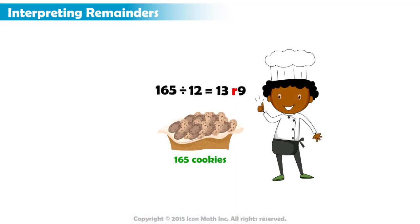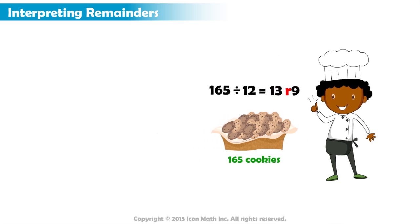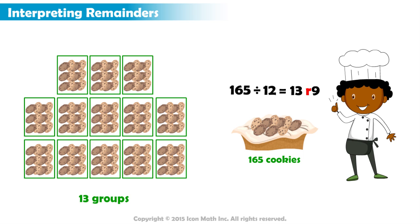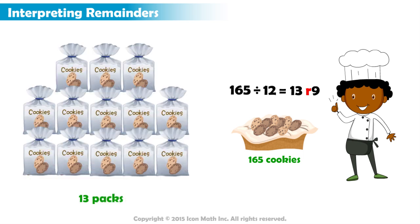If he split the 165 cookies into groups of 12, he gets 13 groups with 9 cookies left over. We talked about dividing cookies into 13 groups, and 12 cookies make a pack. What about the 9 leftover cookies?